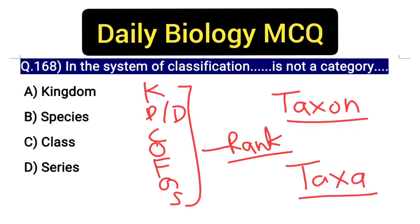You can ask a simple question: group of order is called - then your answer should be class. Group of genus is called family. These are basic questions.